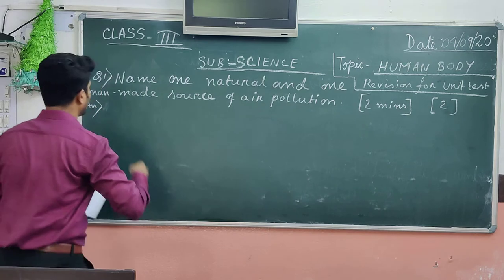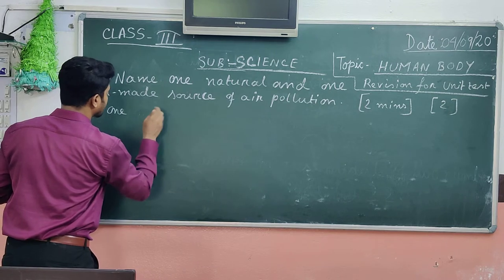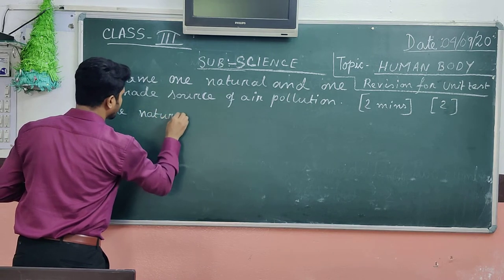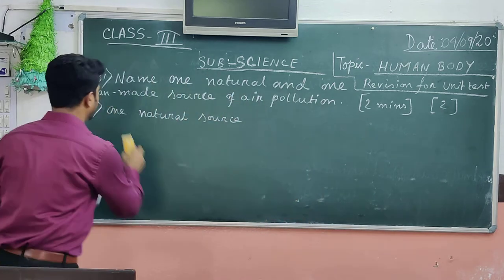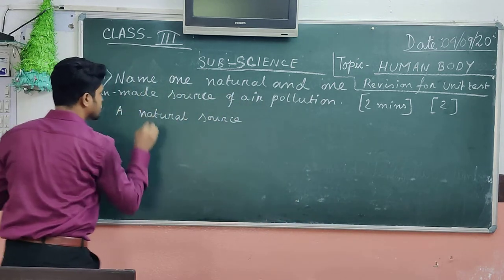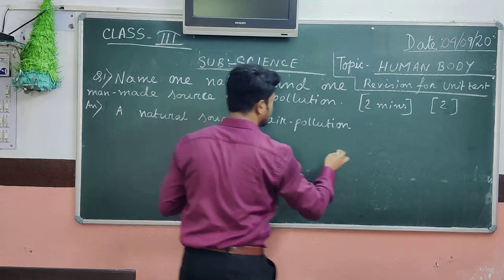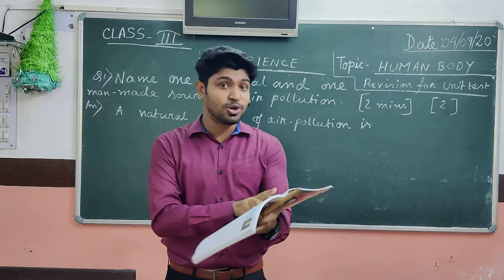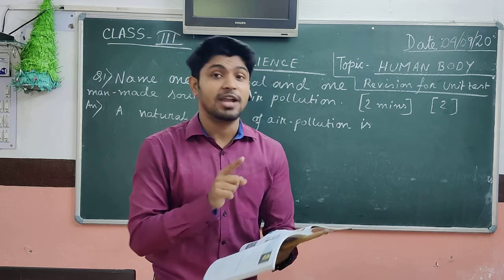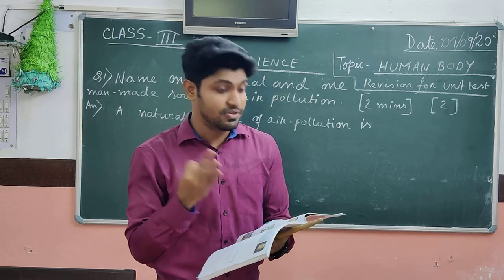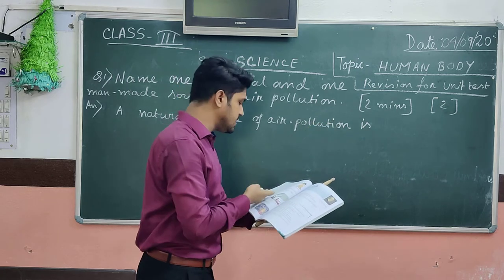Instead of writing 'one,' I can write 'a' — that will make more sense. I will write: 'A natural source of air pollution is...' If you look at page number 28 in your book, it is written there — volcanic eruptions, dust storms, and forest fires. Three sources are given. I am going to write any one of these three. So I am going to write: 'A natural source of air pollution is volcanic eruptions.'